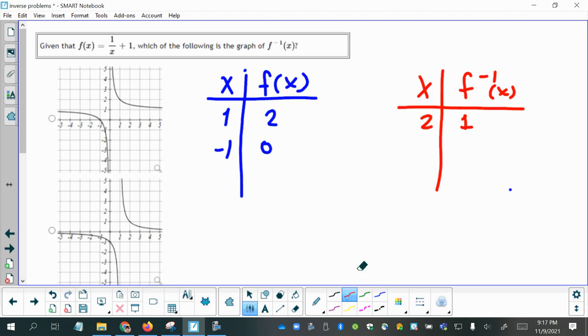Now, if I switch those, I would have 0, negative 1. So maybe 2 points is good enough because it might help us eliminate another answer here.